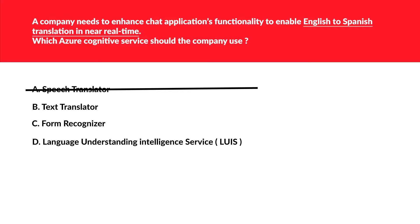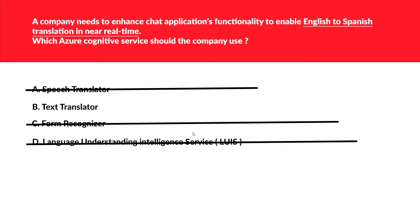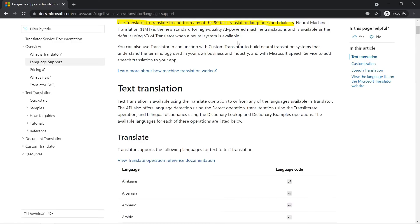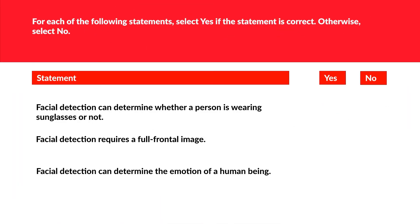So speech translator is the wrong option. The next option is text translator, which does fit the question. Form recognizer is not correct because the question says nothing about scanning documents or forms. LUIS is also wrong because there are no keywords about language understanding. We are left with text translator, and the official documentation clearly mentions that text translator translates to and from 90 languages and dialects. So we lock B as our answer.